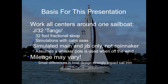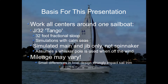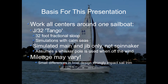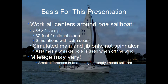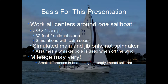keep in mind that any numbers presented, such as forces or angles, are specific to one boat which was simulated, and that's this J-32 Tango. The J-32 is a 32-foot racer cruiser, a fairly typical sloop, but small differences in sailboat design make a big difference in the way boats perform. So keep that in mind as you're looking through the presentation.